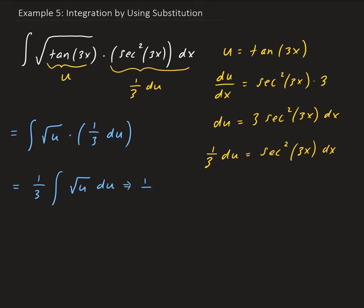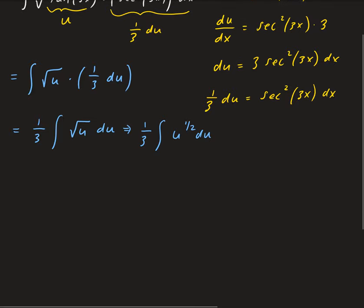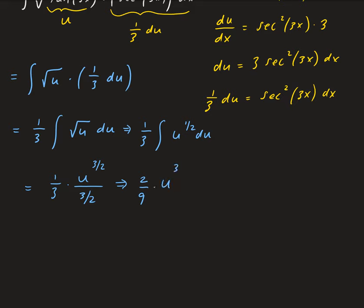This is the same as one-third times the integral of u to the one-half du. So we can go ahead and use the power rule for integration. This gives us one-third times u — we add 1 to one-half, giving us three-halves — then divide by three-halves. One-third divided by three-halves gives us two-ninths.